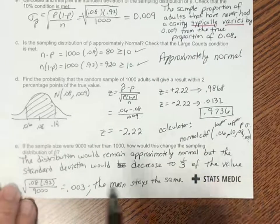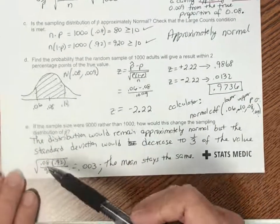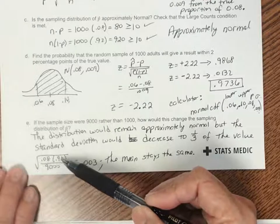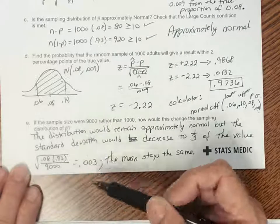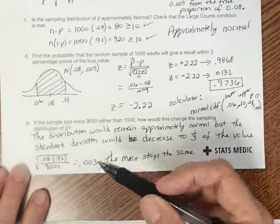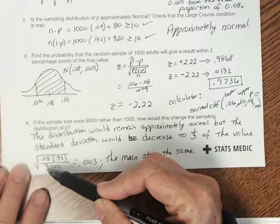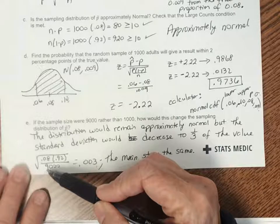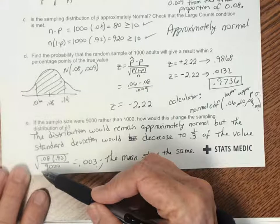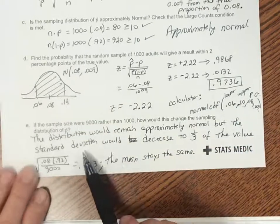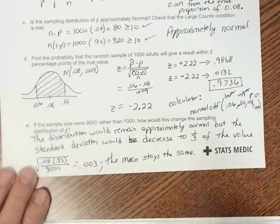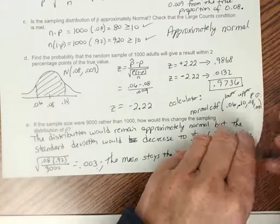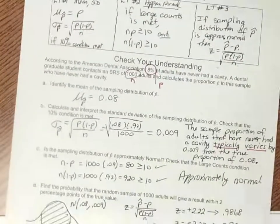If the sample size were 9,000 instead of 1,000, the standard deviation would be the square root of 0.08 times 0.92 divided by 9,000, giving 0.003. We've multiplied the denominator by 9, so taking the square root of 1/9 gives one-third. The new standard deviation decreases to one-third of the original value, while the mean stays the same. Feel free to check your textbook or ask questions.